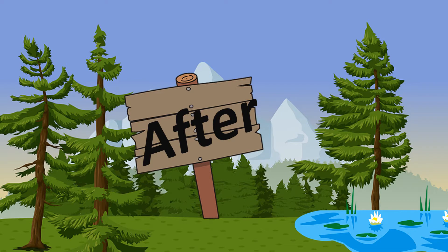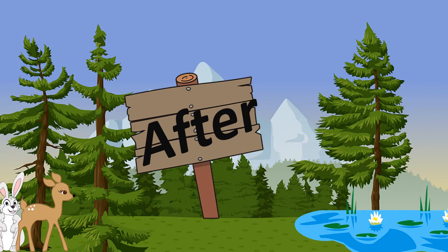So friends, let's understand this concept of after with this short story. In our story, we have two best friends, Mr. Rabbit and Miss Deer. They both are good friends and it seems they are in search of something.